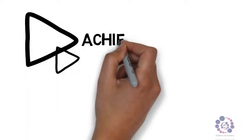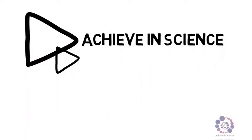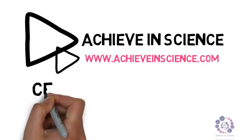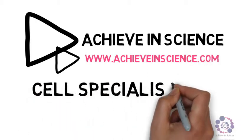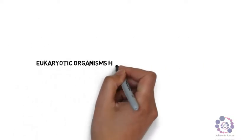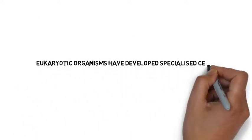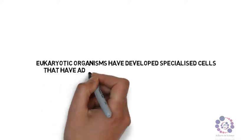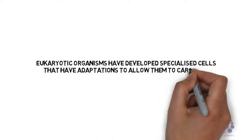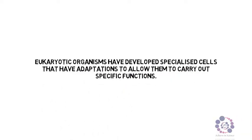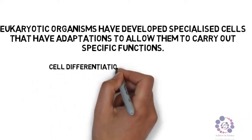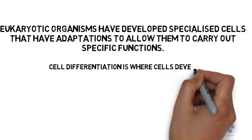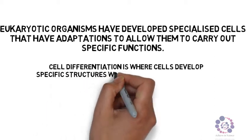Welcome to another Achieving Science video. This video is all about cell specialisation. We're going to look at how cells have differentiated. Eukaryotic organisms have developed specialised cells that have adapted to allow them to carry out specific functions. Cell differentiation is where a cell develops a specific structure which allows it to function.